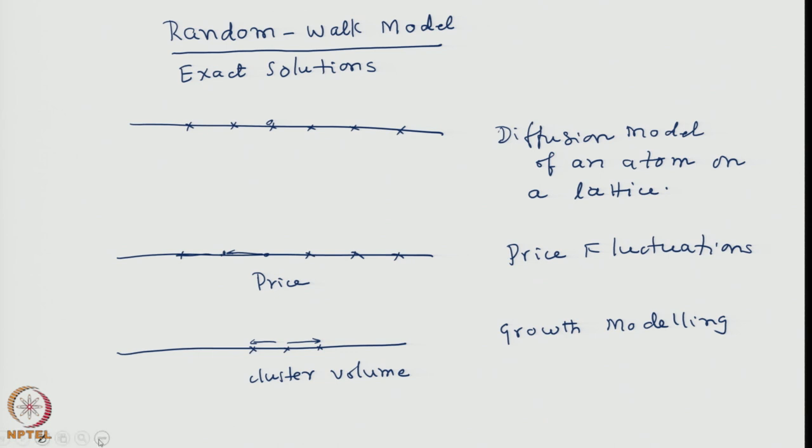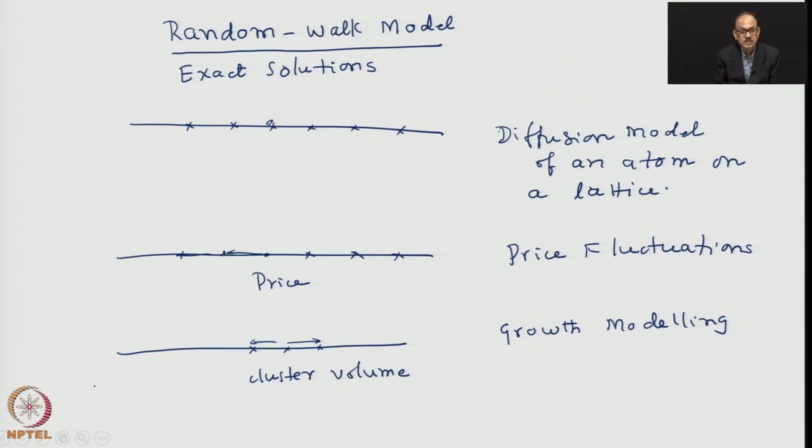So these three examples tell us that studying a simple random walk has many implications, and therefore it is a very important problem. It is not just about a person walking along, it is not just a hypothetical problem of a person walking along a linear stretch, having lost his memory completely, as we said in the last lecture.